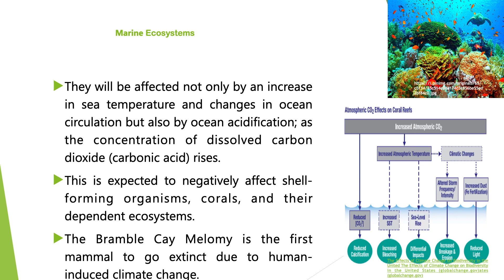Marine Ecosystems: Marine ecosystems and coastal areas are highly sensitive to temperature and chemical changes in seawater. Oceans cover 70% of the earth's surface, forming the largest habitat on earth, while coastal areas contain some of the world's most diverse and productive ecosystems, including mangroves, coral reefs and sea grass beds. Coral reefs, sometimes called the tropical rainforests of the ocean, provide great benefits in goods and services. Marine ecosystems will be affected not only by an increase in sea temperature and changes in ocean circulation, but also by ocean acidification as the concentration of dissolved carbon dioxide rises. This is expected to negatively affect shell-forming organisms, corals and their dependent ecosystems.